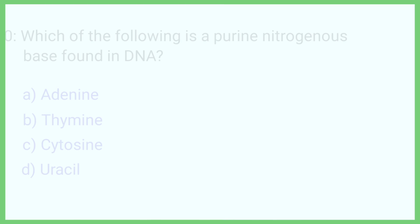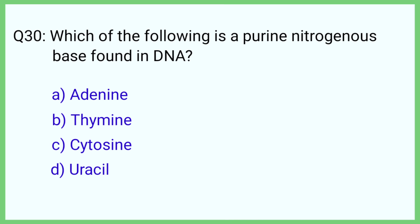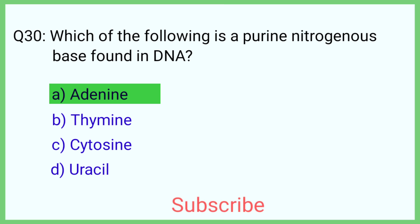Question number 30. Which of the following is a purine nitrogenous base found in DNA? The correct answer is option A: Adenine.